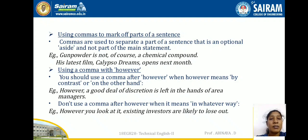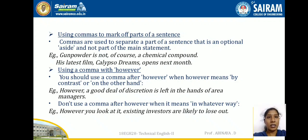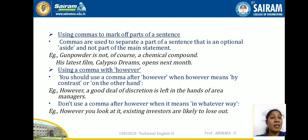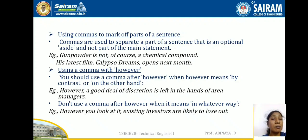Using a comma with 'however': you should use a comma after 'however' when it means 'by contrast' or 'on the other hand.' For example: 'However, a good deal of discretion is left in the hands of area managers.' But you should not use a comma when 'however' means 'in whatever way.' For example: 'However you look at it, investors are likely to lose out.'